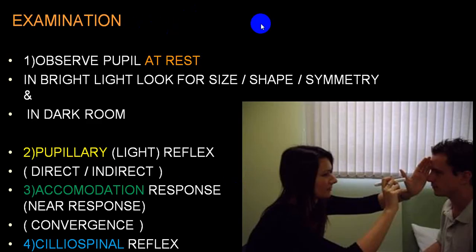When you start examining a person, first let the person look straight with both eyes open and observe the size of the pupil in both eyes — if unequal, we call it anisocoria; if equal, normal. At the same time, look at the eyelids (upper and lower), the position of eyebrows, and the axis of both eyeballs. Check for nystagmus, strabismus, and ptosis.